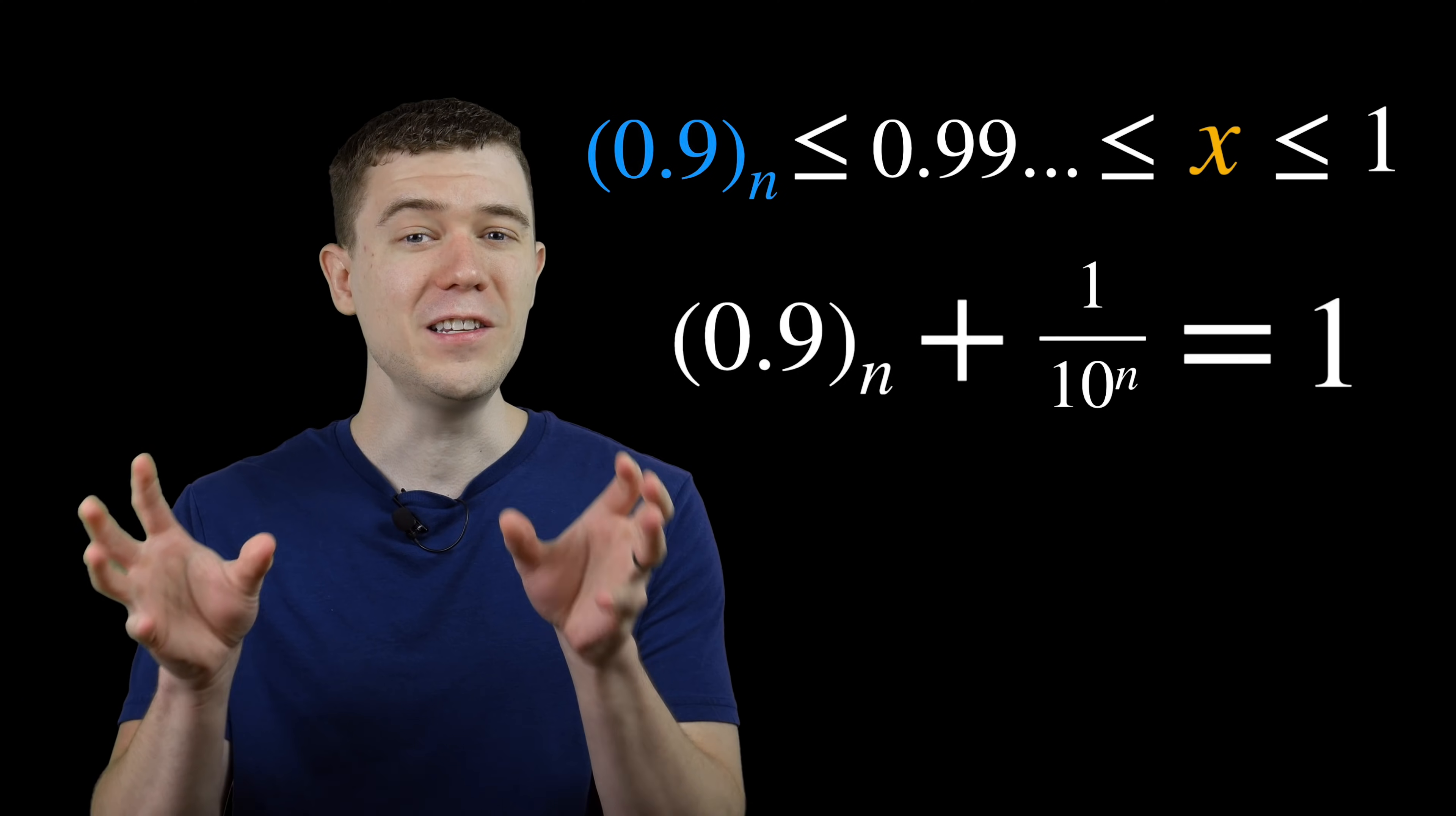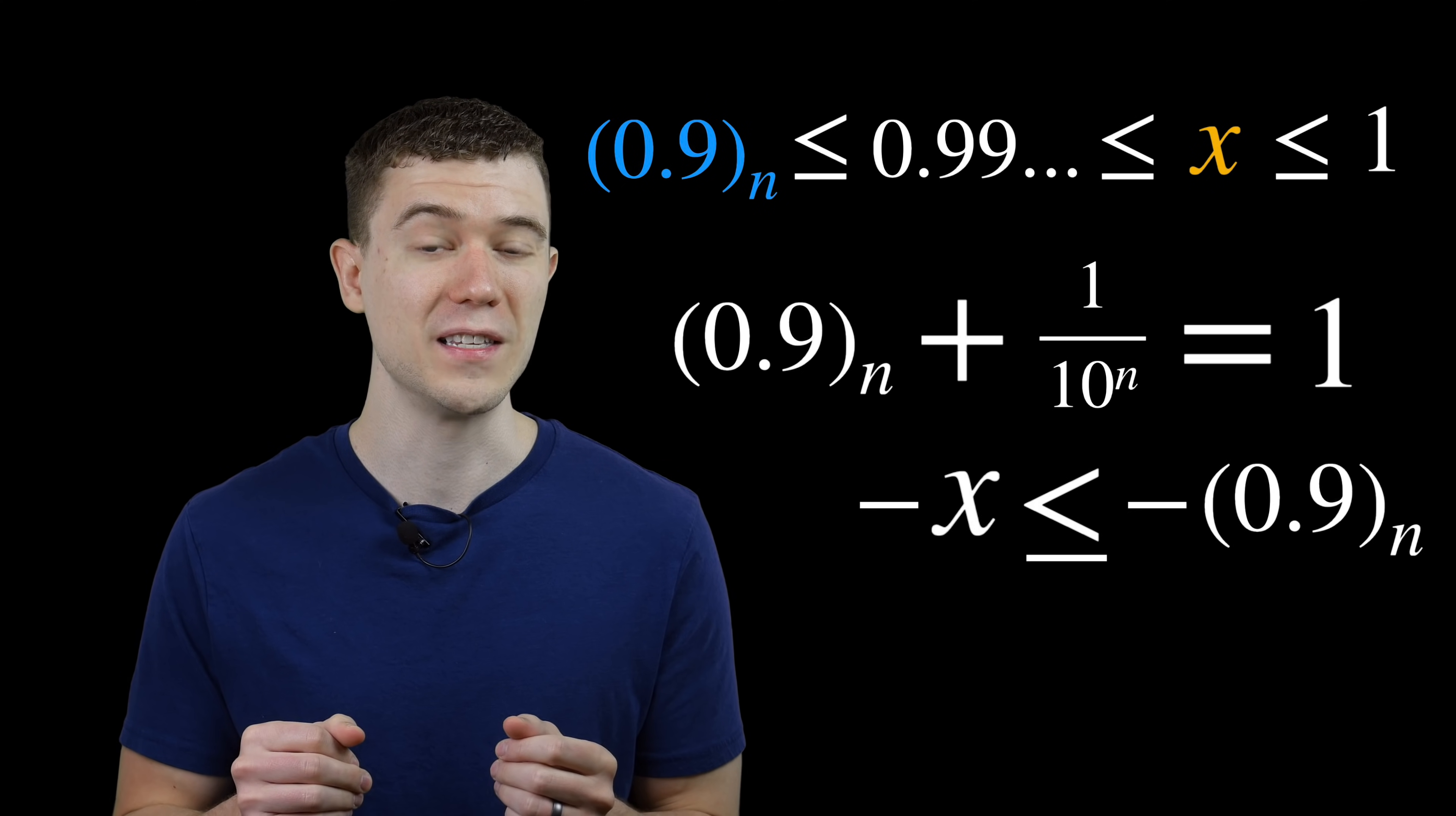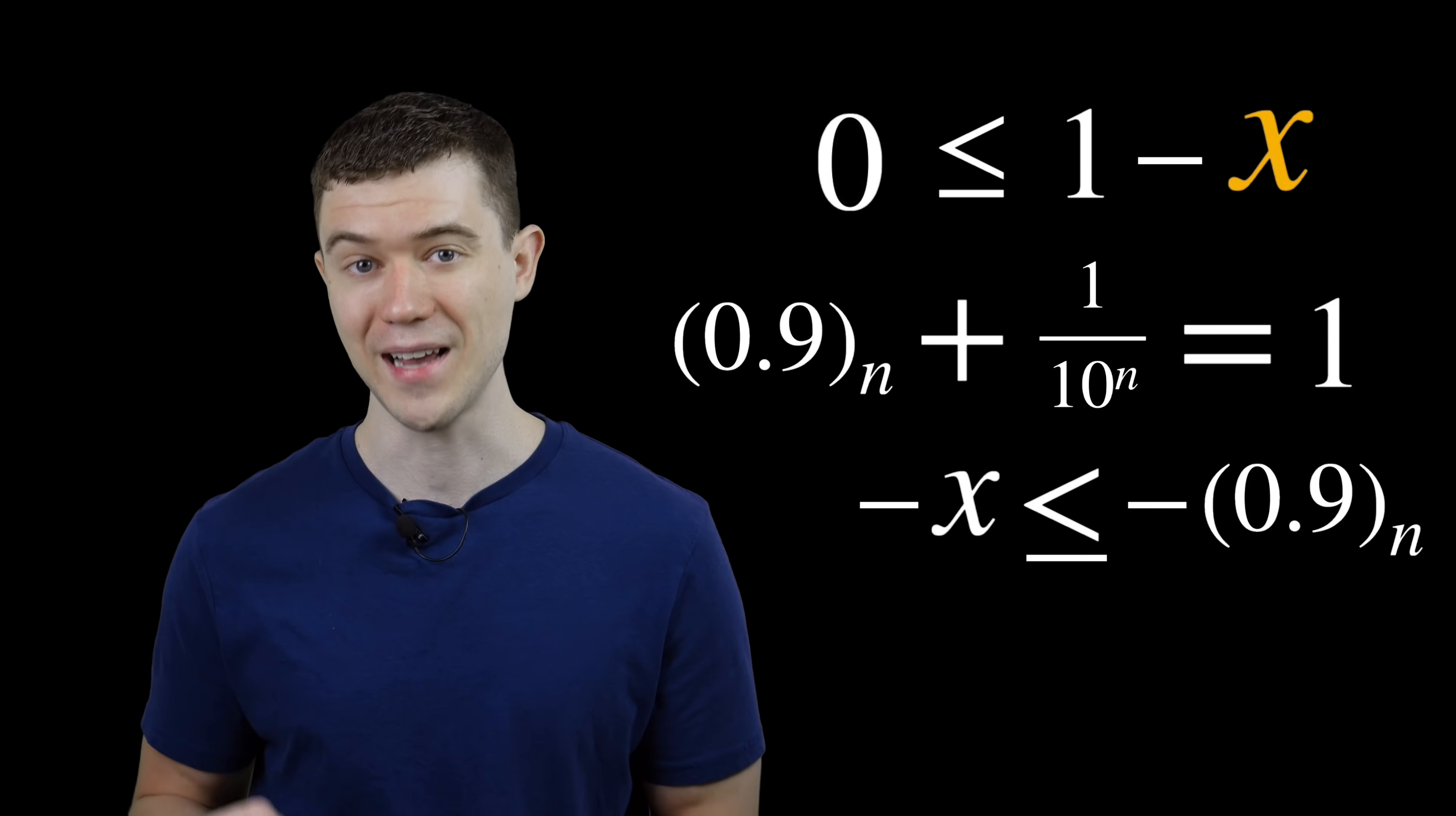So here comes the magic. Let's look at both sides of our inequality. 0.9 sub n less than or equal to x means the same thing as negative 0.9 sub n is greater than or equal to negative x. x less than or equal to 1 means the same thing as 0 is less than or equal to 1 minus x.